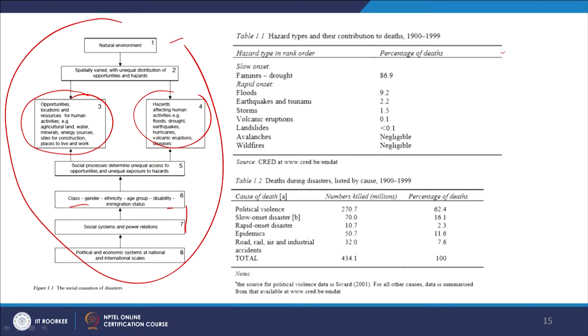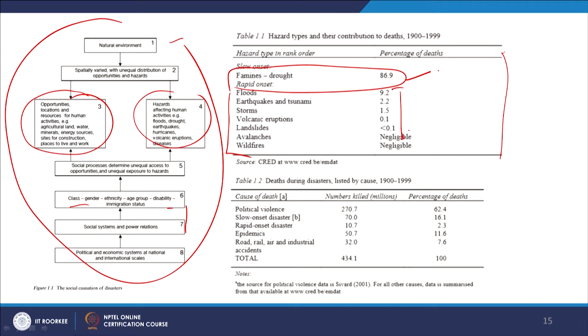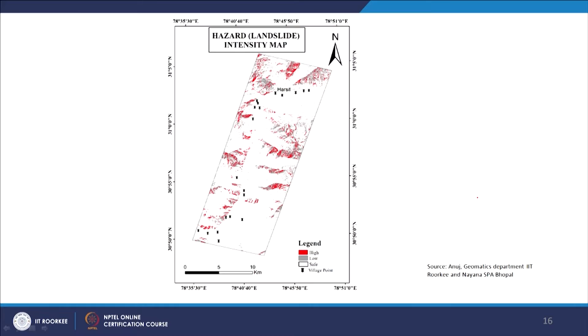Looking at the statistical aspect, the CRED — Centre for Research on the Epidemiology of Disasters — shows that famines, which are slow-onset disasters like droughts, account for 86.9 percent of deaths, whereas rapid-onset disaster deaths are very small in comparison. Deaths from political violence account for 270 million and 62.4 percent. There has also been advancement in tools — surveyors and geomatics professionals can develop hazard mapping and identify landslide-prone areas, as demonstrated by a map developed for a PhD student with assistance from the geomatics department.